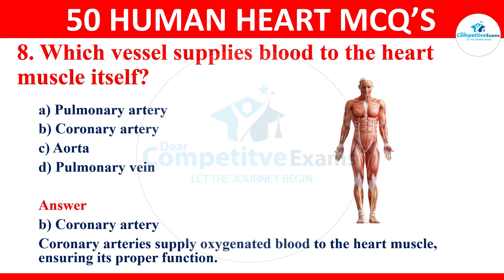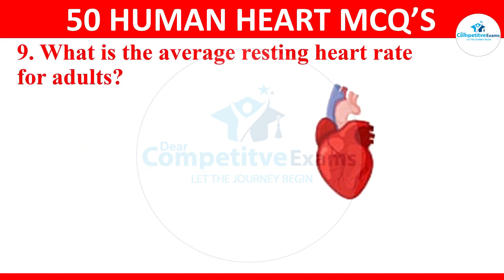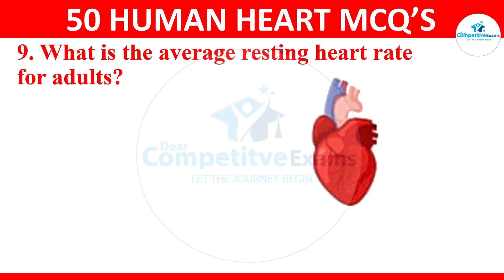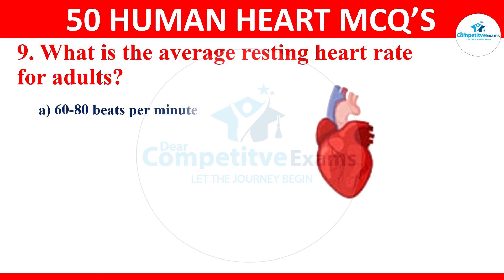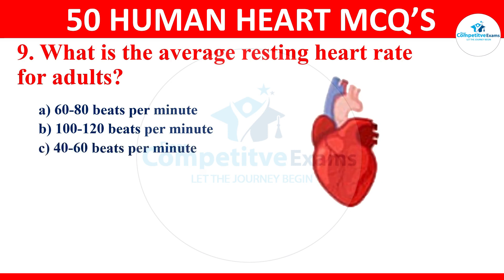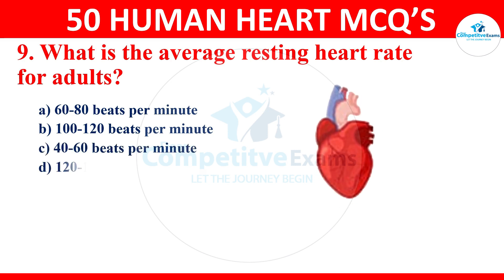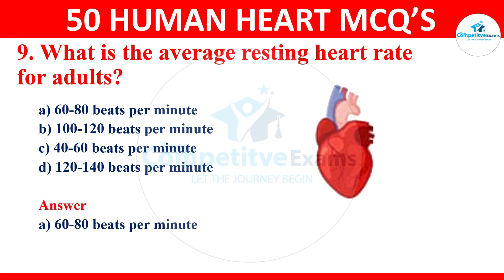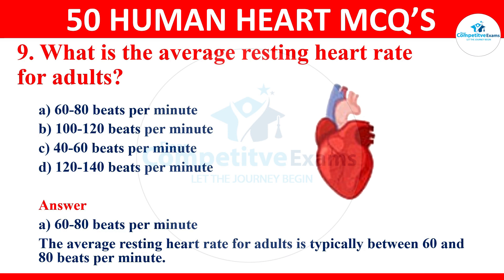Question 9: what is the average resting heart rate for adults? Options are 60–80 beats per minute, 100–120 beats per minute, 40–60 beats per minute, or 120–140 beats per minute. The correct answer is 60–80 beats per minute. The average resting heart rate for adults is typically between 60 and 80 beats per minute.